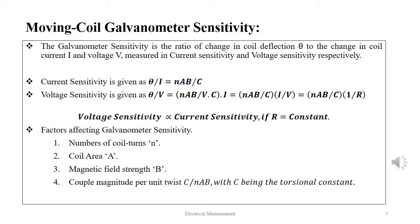Galvanometer sensitivity is the ratio of change in coil deflection theta to the change in coil current and coil voltage, measured as current sensitivity and voltage sensitivity respectively. Current sensitivity is given as theta/I = NBA/C, and voltage sensitivity is given as theta/V = NBA/(V·C·I). Thus theta/V = NBA/C × I/R.